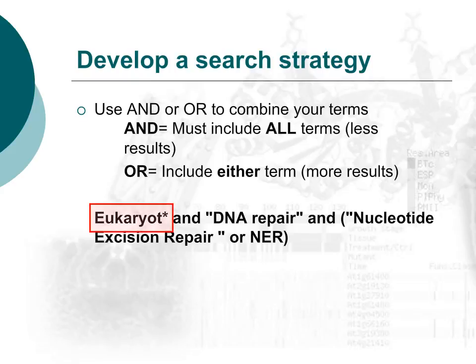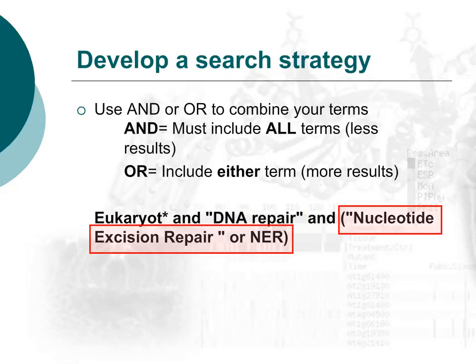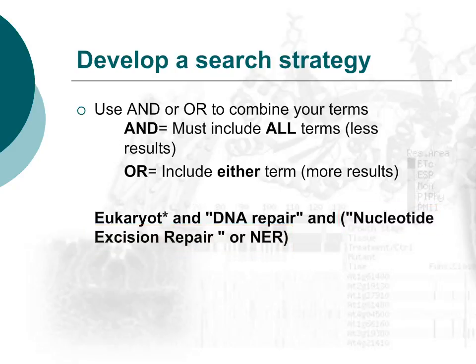Our search will include the term eukaryote with a wildcard asterisk so that our search is expanded to include different spellings of the term. This is combined with 'DNA repair' in quotation marks to keep both terms together as a phrase. Our search also includes 'nucleotide excision repair' or NER in brackets so that results will contain either the phrase or its synonym NER.